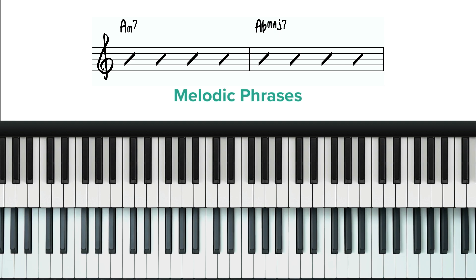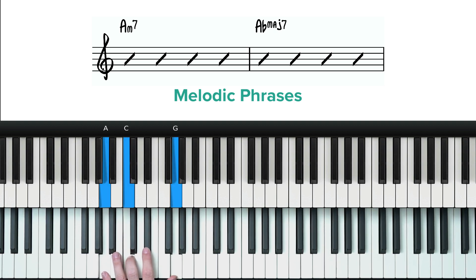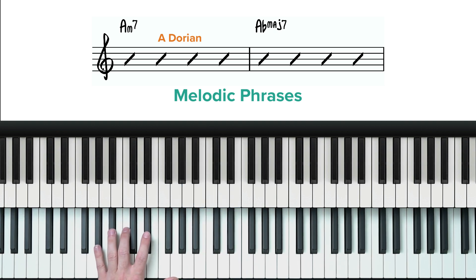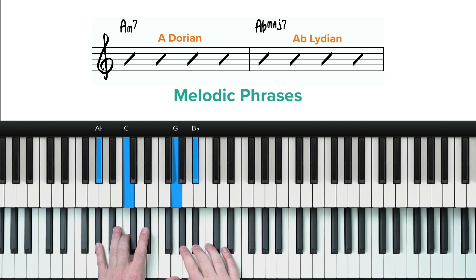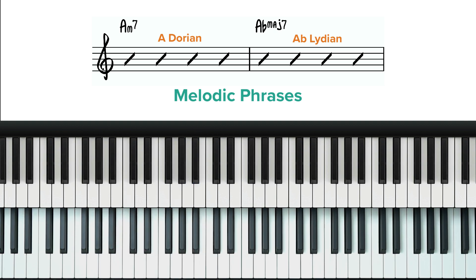Now, there are a few ways to do this, one of which is to think in terms of scales. So over the A minor, you could think A Dorian. And over the A flat major, you could think A flat Lydian. This gives you a pool of notes to choose from whilst playing over each chord.